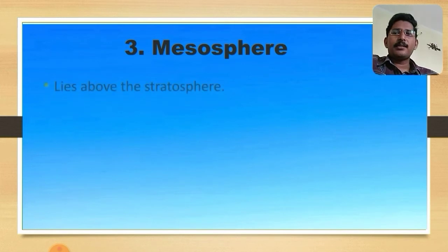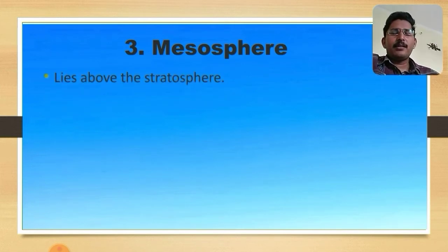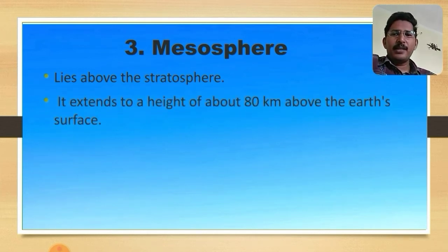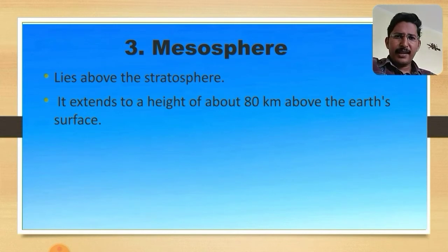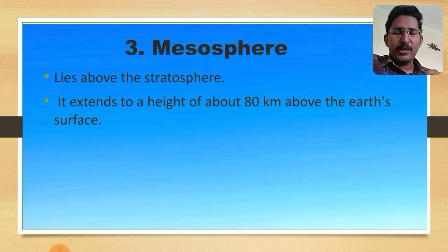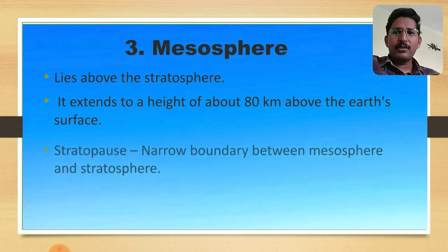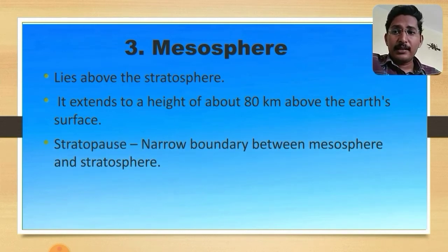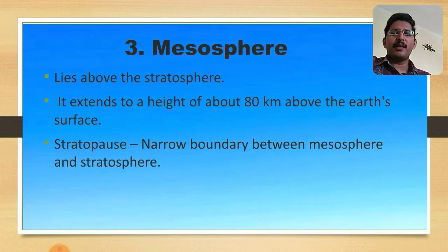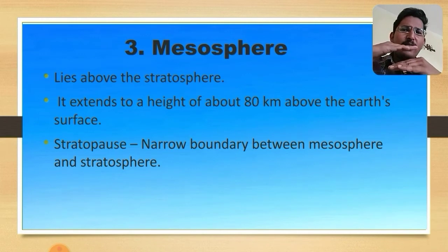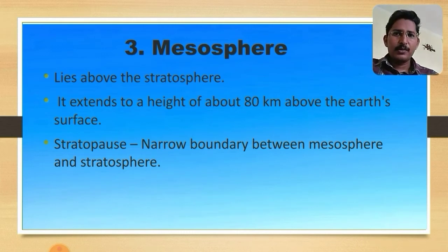The third layer is the mesosphere, which lies above the stratosphere at about 80 kilometers above the Earth's surface (approximately). The narrow boundary between the mesosphere and the stratosphere is called the stratopause. Remember this term — stratopause.